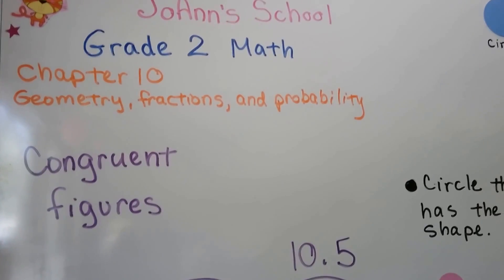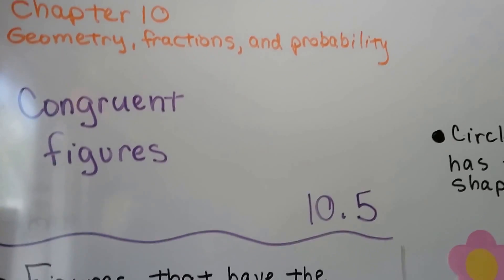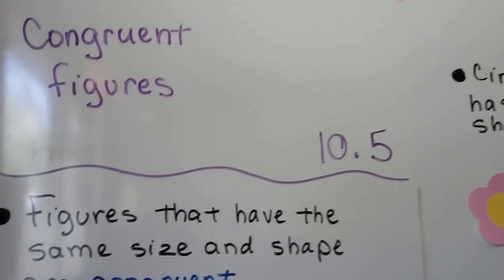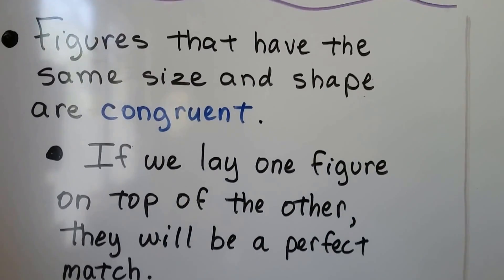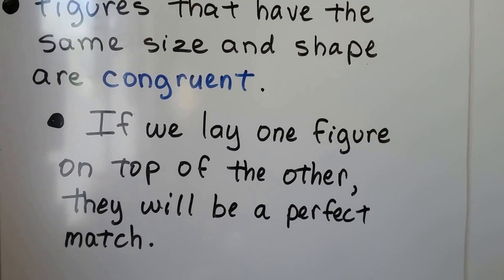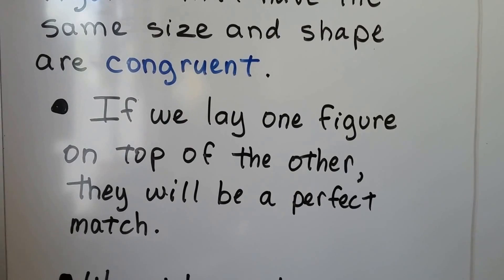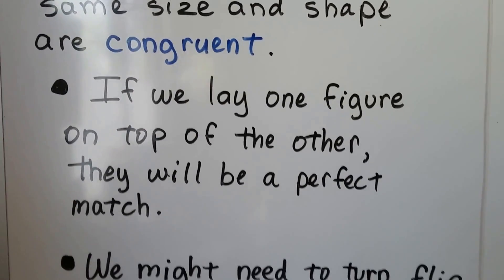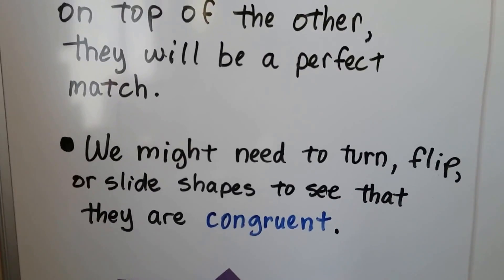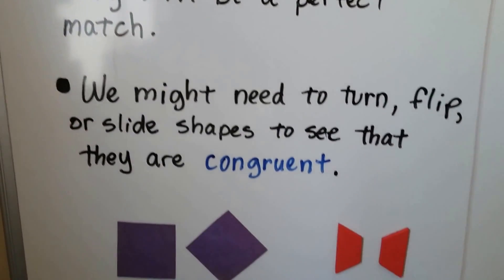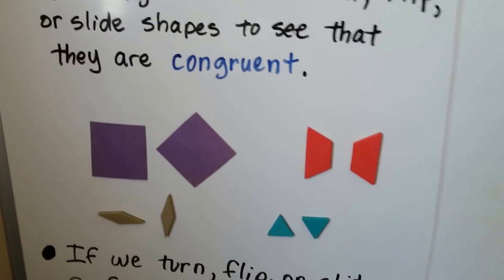Congruent figures. We're at lesson 10.5. Figures that have the same size and shape are congruent. It means if we lay one figure on top of the other, they'll be a perfect match. We might need to turn, flip, or slide the shapes to see that they are congruent. So look at the shapes I have here.